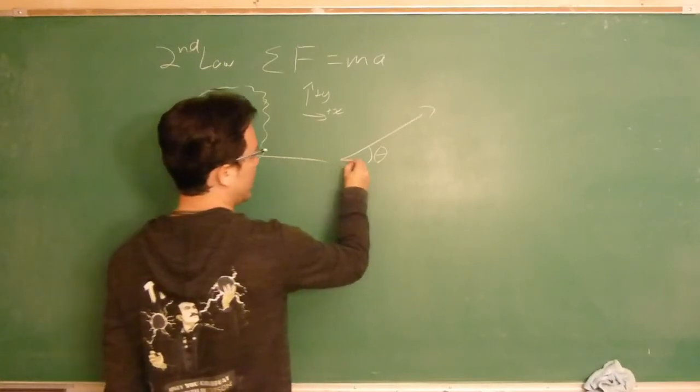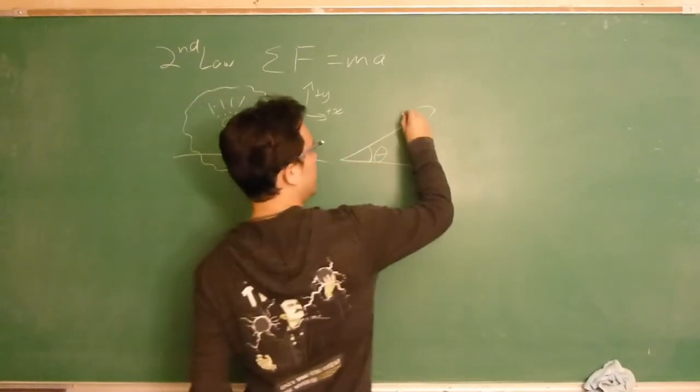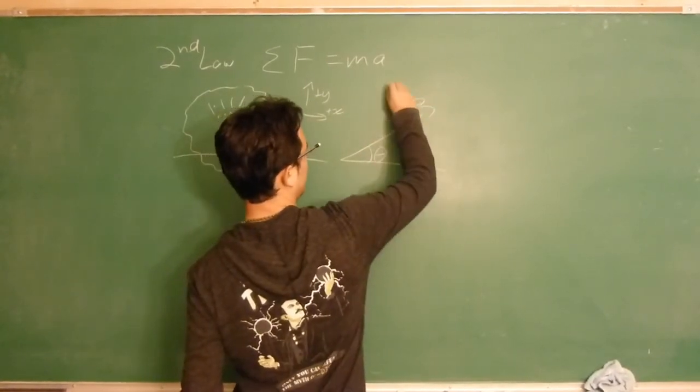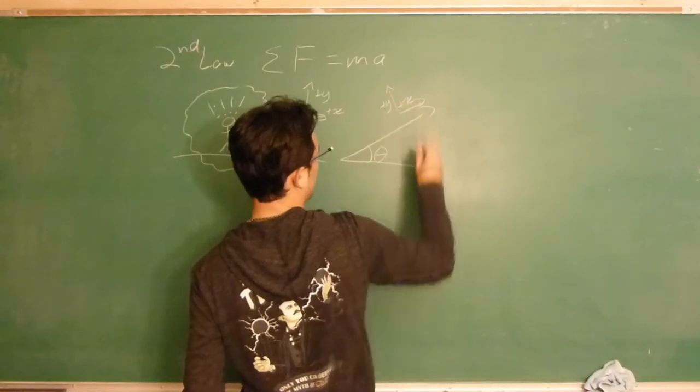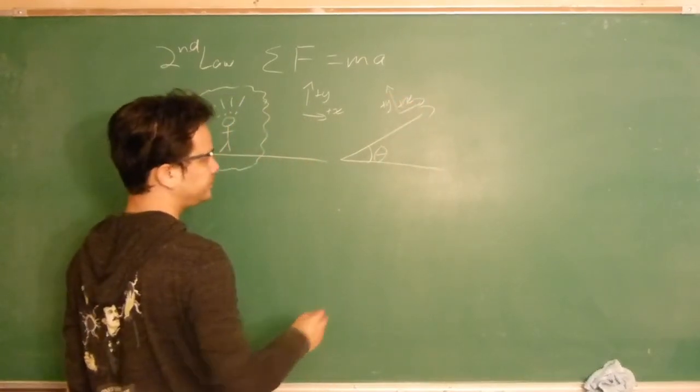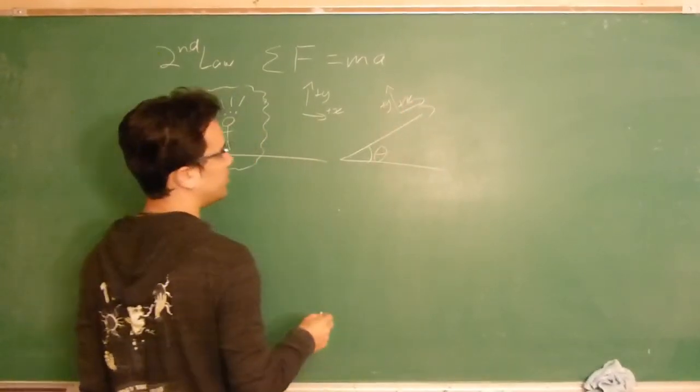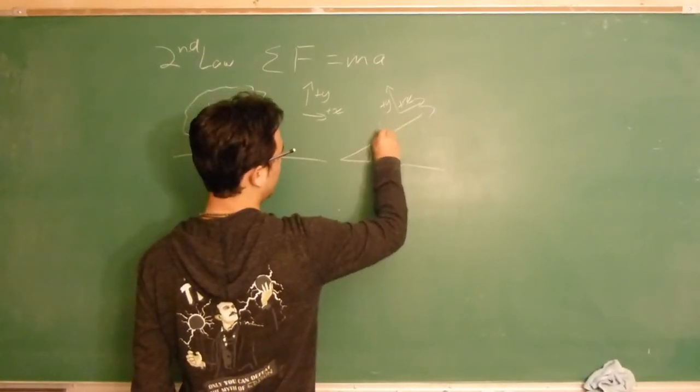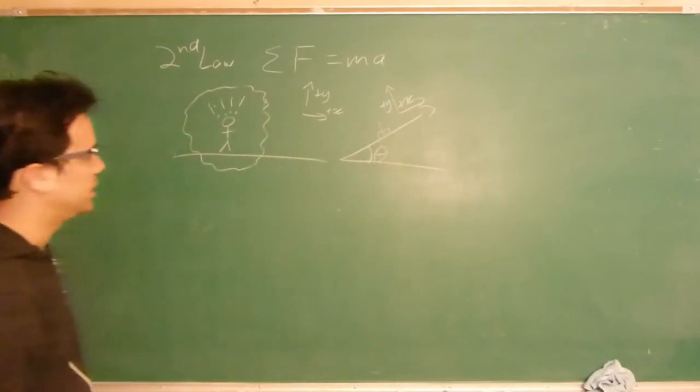In fact, on almost every inclined plane, it's best to have your plus x axis point along the plane, and your plus y axis, because they've got to be at 90 degrees to one another, pointed up from the plus x. So it's at a 90 degree angle with the plane there.